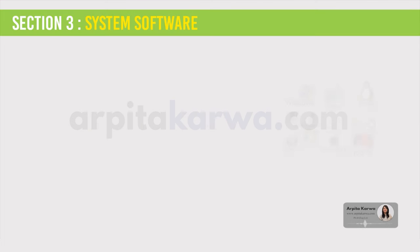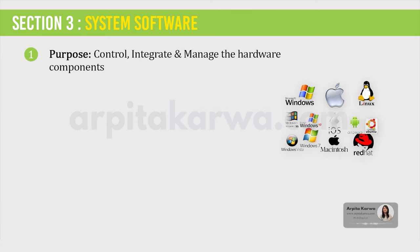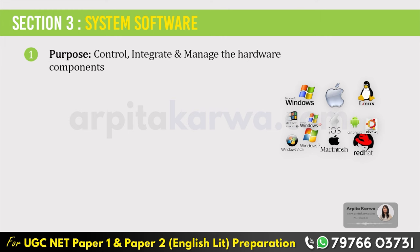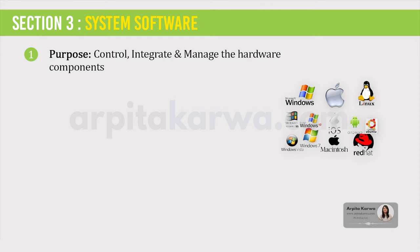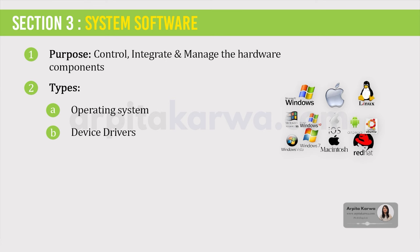Let us first talk about system software. Their purpose is to control, integrate, and manage the individual hardware components of a computer. System software coordinates the activities and functions of hardware and software, and it controls the operations of computer hardware. A computer's operating system is an example of system software. Operating systems control the computer hardware and act as an interface with application programs. System software is further divided into two types: operating system and device drivers. We will study them individually in different sections of this lecture.